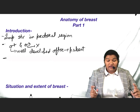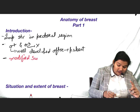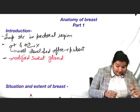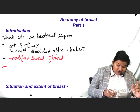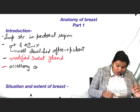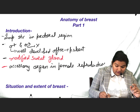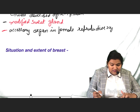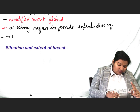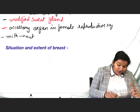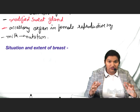The breast is a modified sweat gland. Breast forms an important accessory organ in the female reproductive system. Breast produces milk, which helps in the nutrition of the newborn. So here we are done with the introduction about the breast.